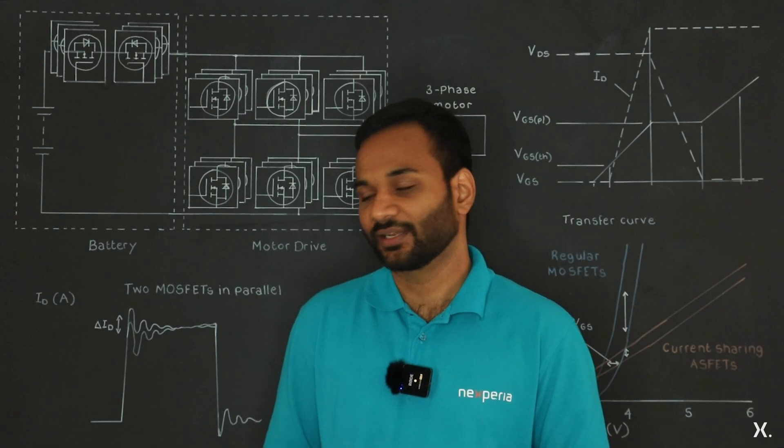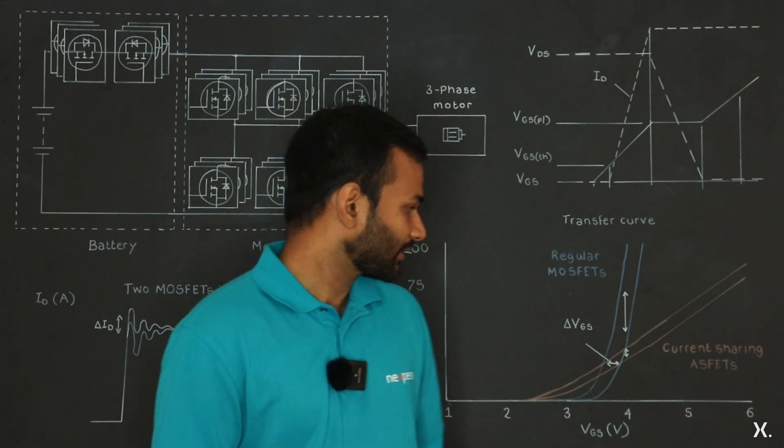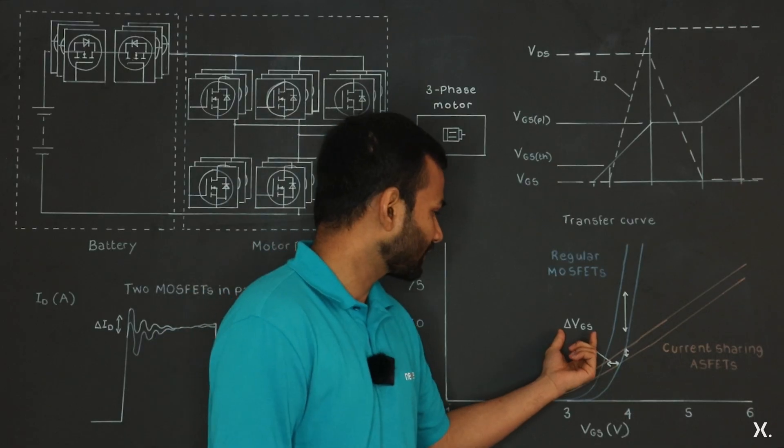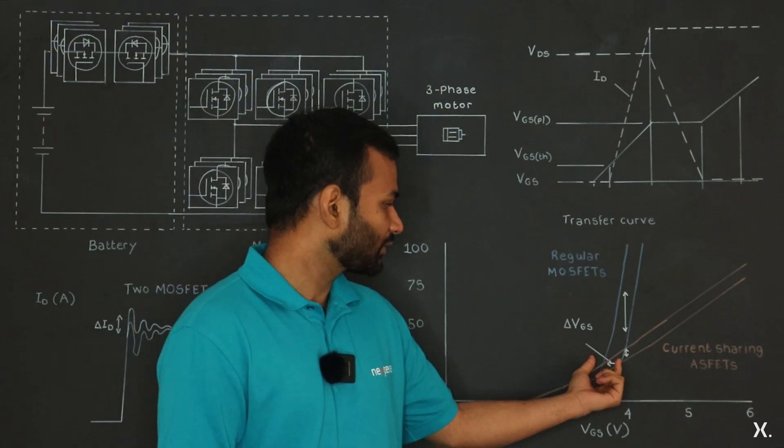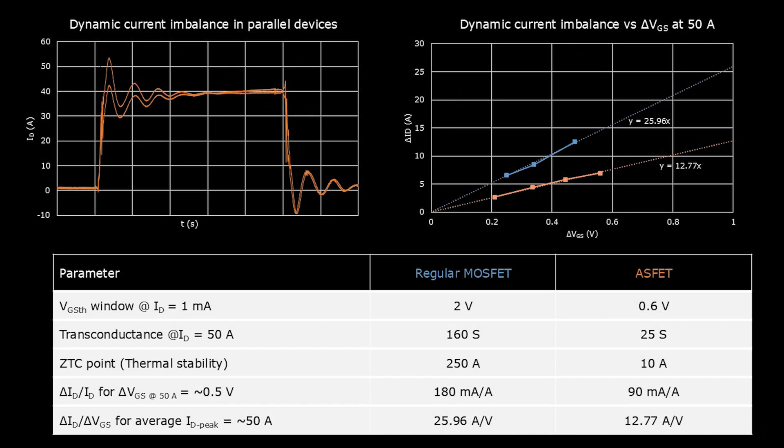We can look at this data differently. We can plot the delta ID, that is the current imbalance, versus the delta VGS, which is the VGS separation between these two parallel MOSFETs.